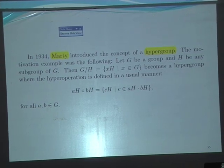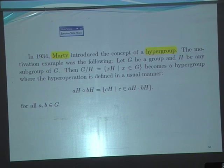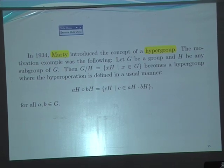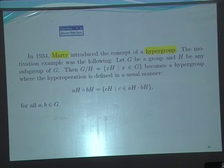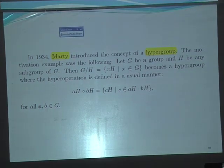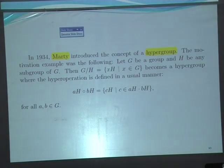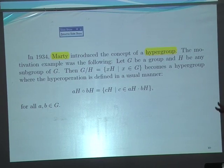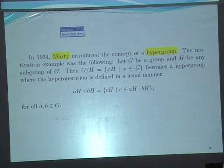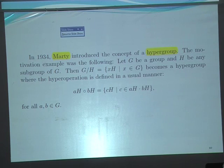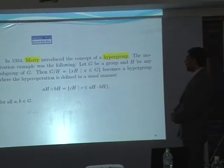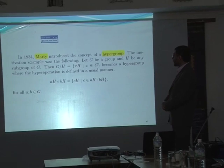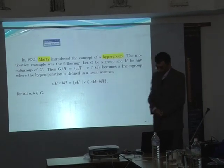Marty was the first person to consider the notion of a hypergroup by supposing the quotient when the subgroup is not normal. This is the first motivation for the consideration of the hypergroup.